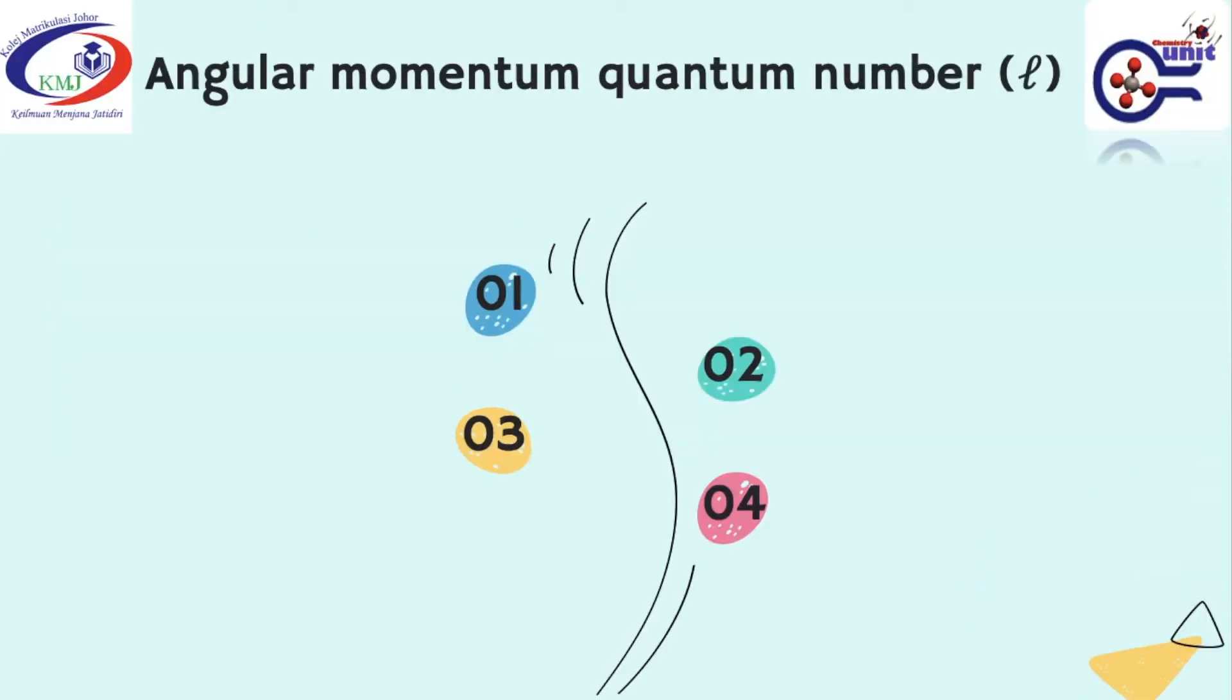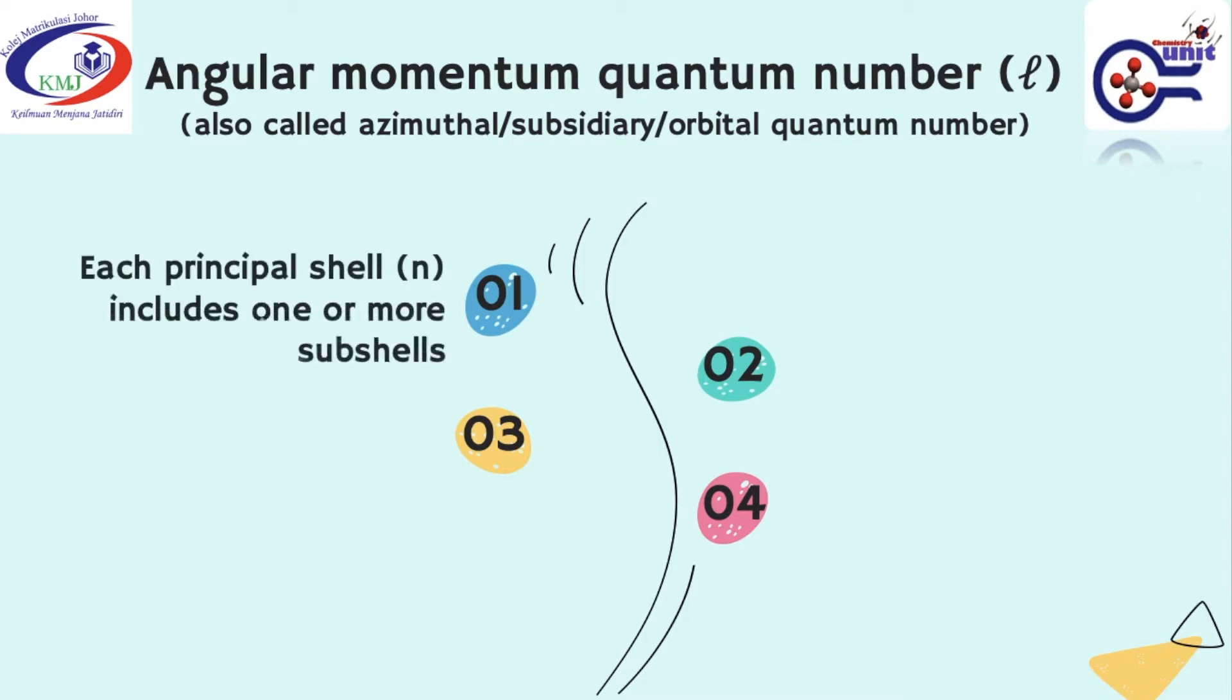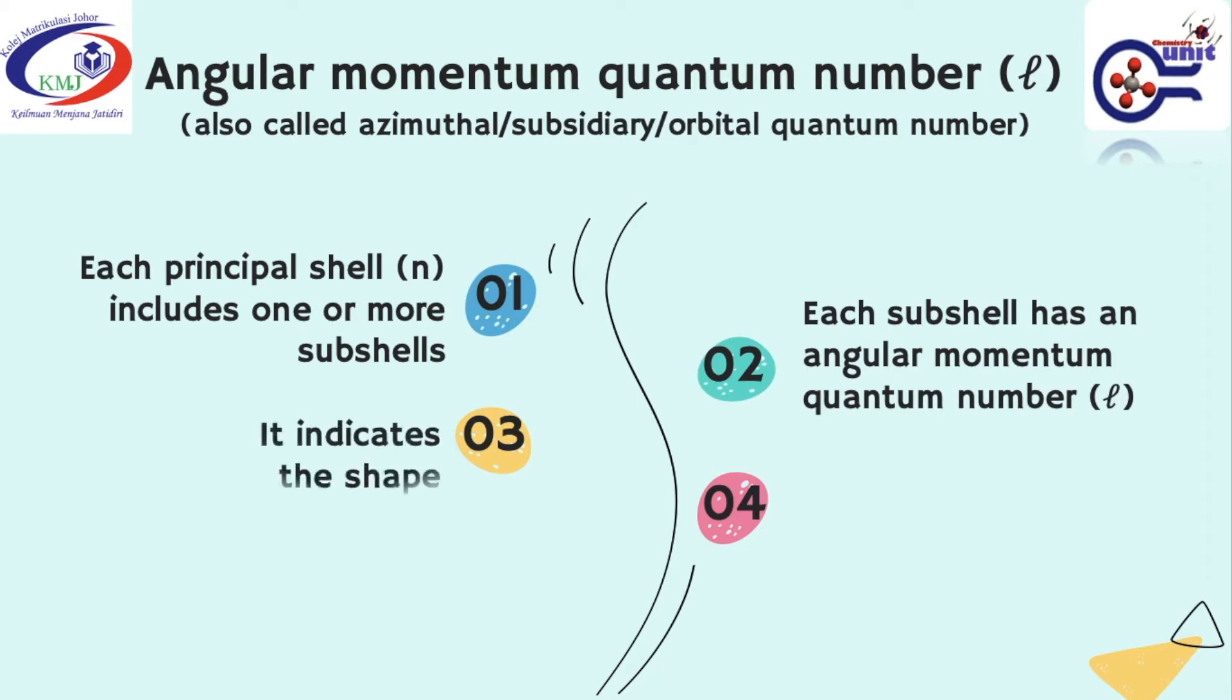Angular Momentum Quantum Number, also called Azimuthal, Subsidiary, or Orbital Quantum Number. Each principal shell includes one or more subshells. Each subshell has an Angular Momentum Quantum Number. It indicates the shape of orbital.